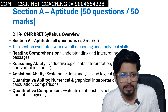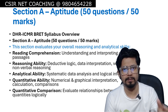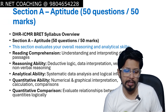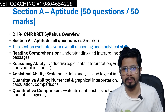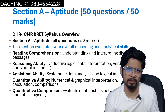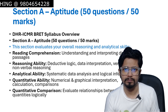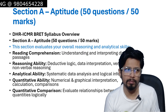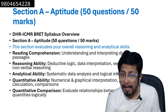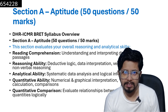In simple words, CSIR NET Part A is very similar to Section A of the ICMR BRETT examination, with questions related to data interpretation, graphs, surface area and volume, work and time, height and distance, age problems, calendar problems, train problems, percentage calculations, and probability. All these problems will be there in the aptitude section of ICMR BRETT syllabus.